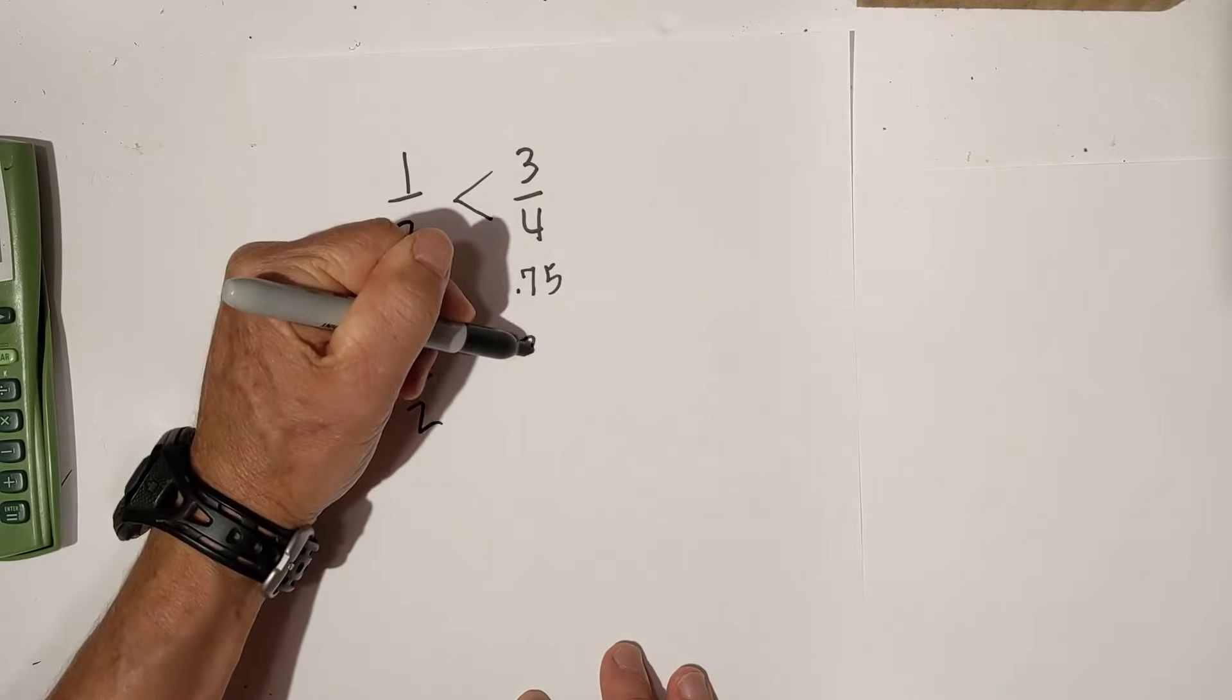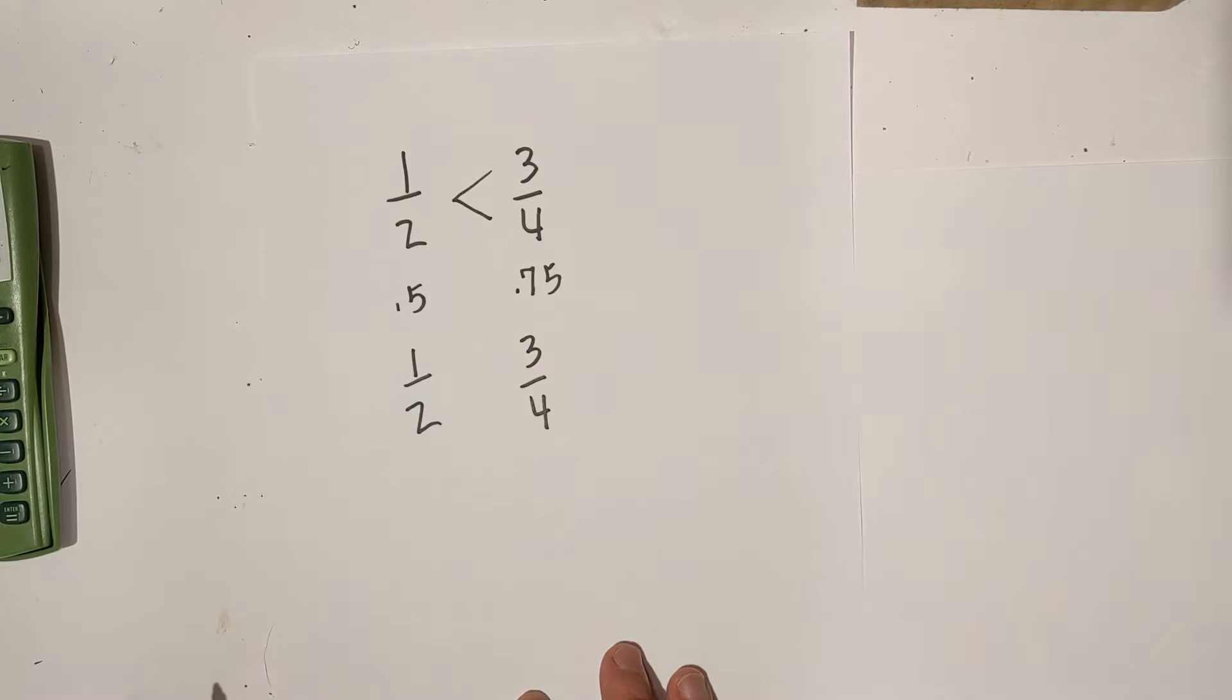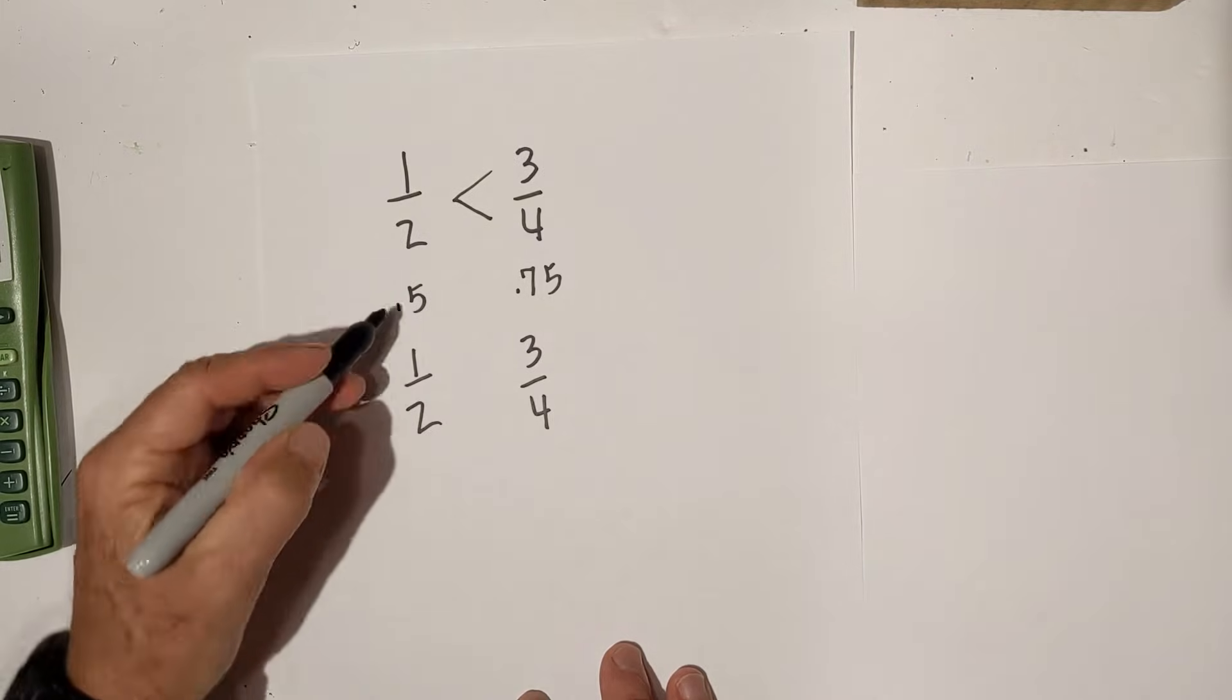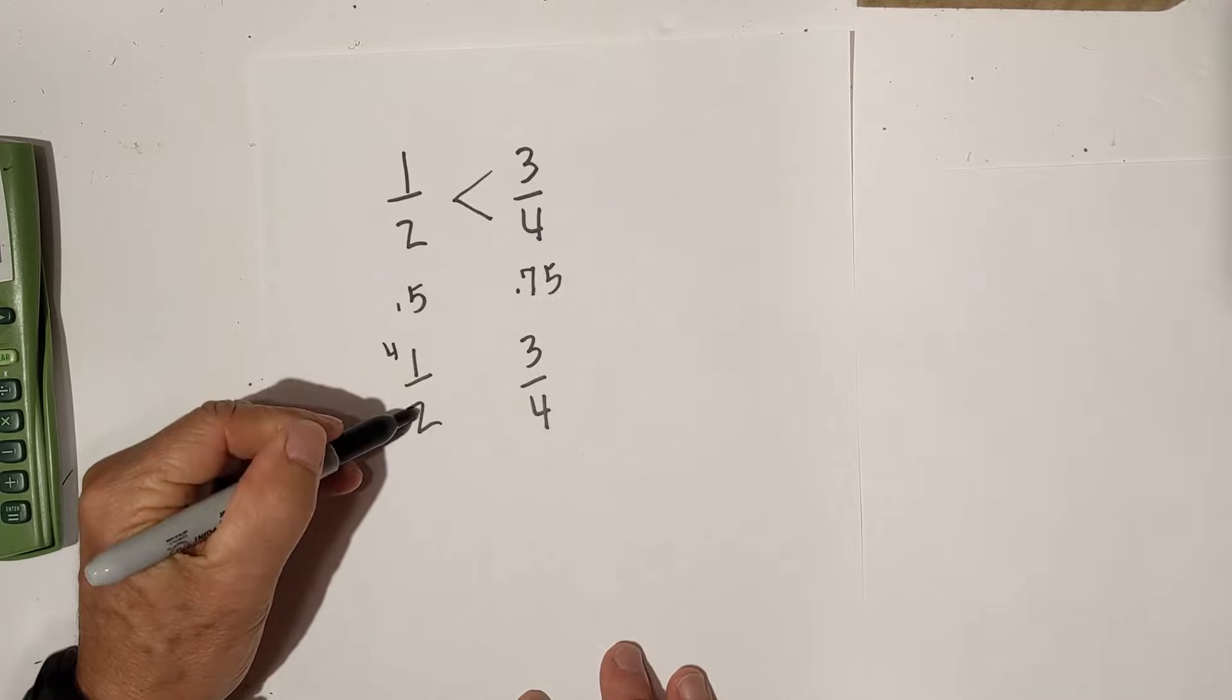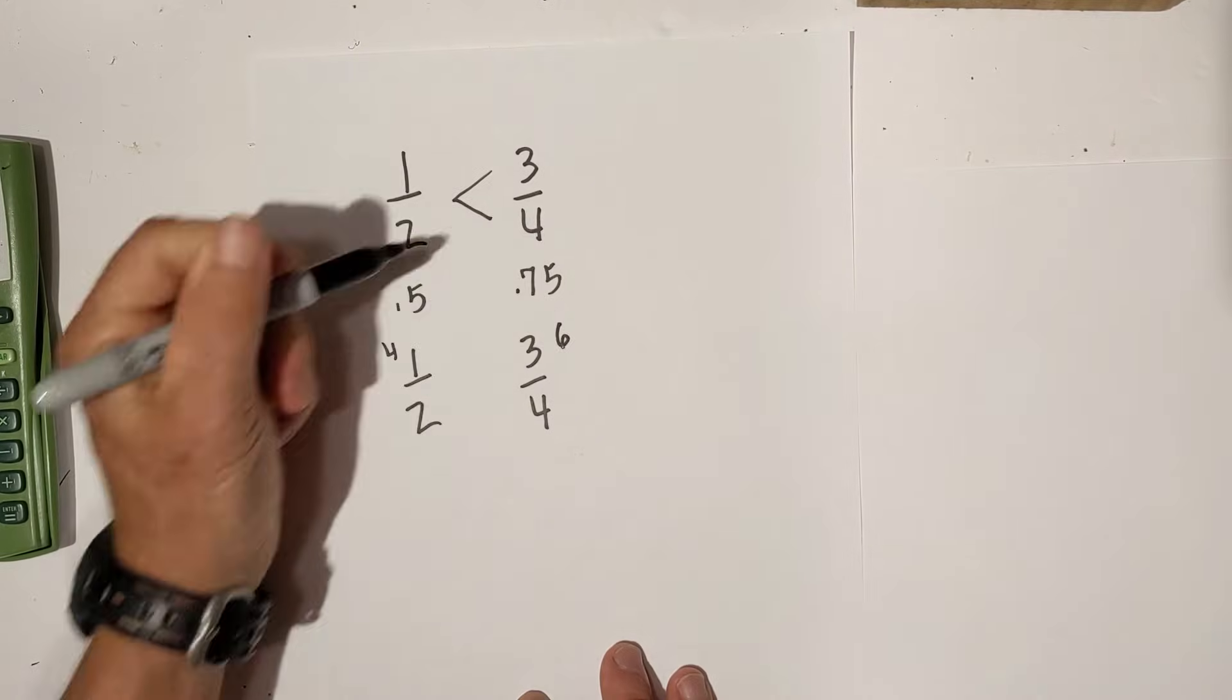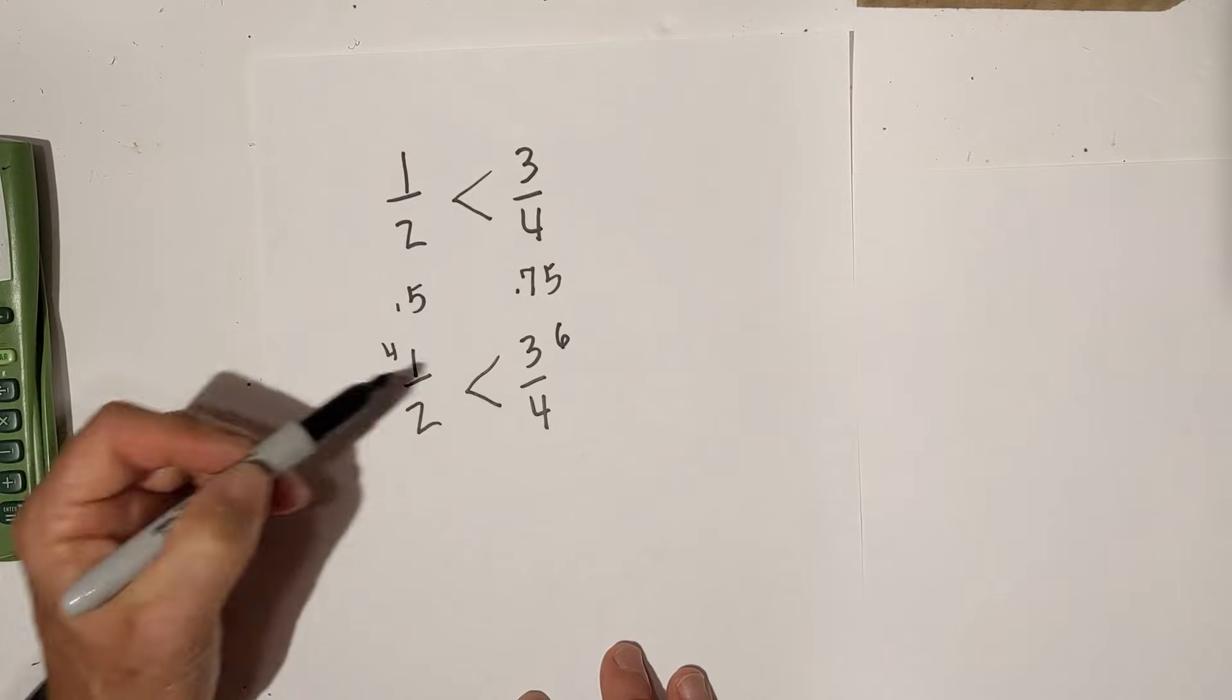A second technique is they call it the butterfly technique, or you just cross multiply. 4 times 1 is 4. 2 times 3 is 6. 6 larger than 4.